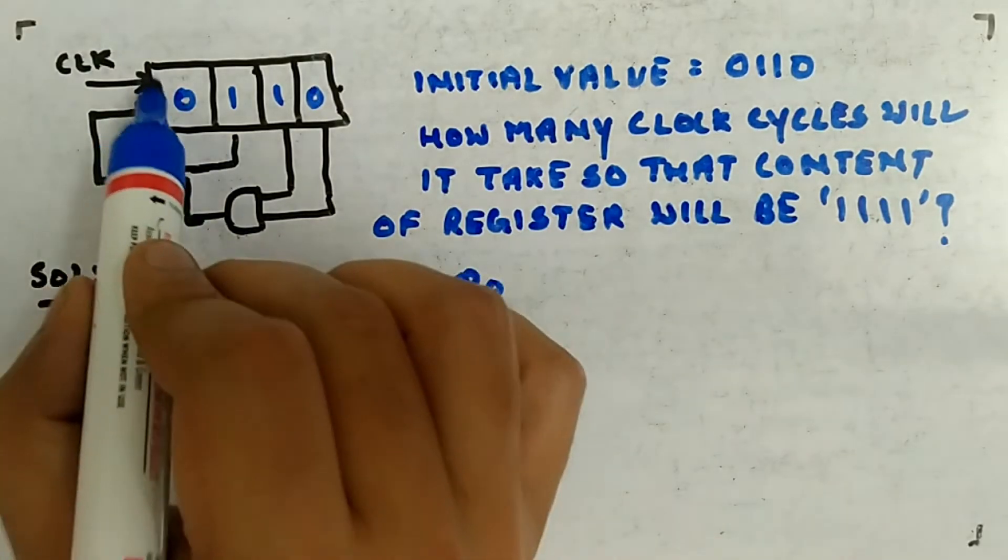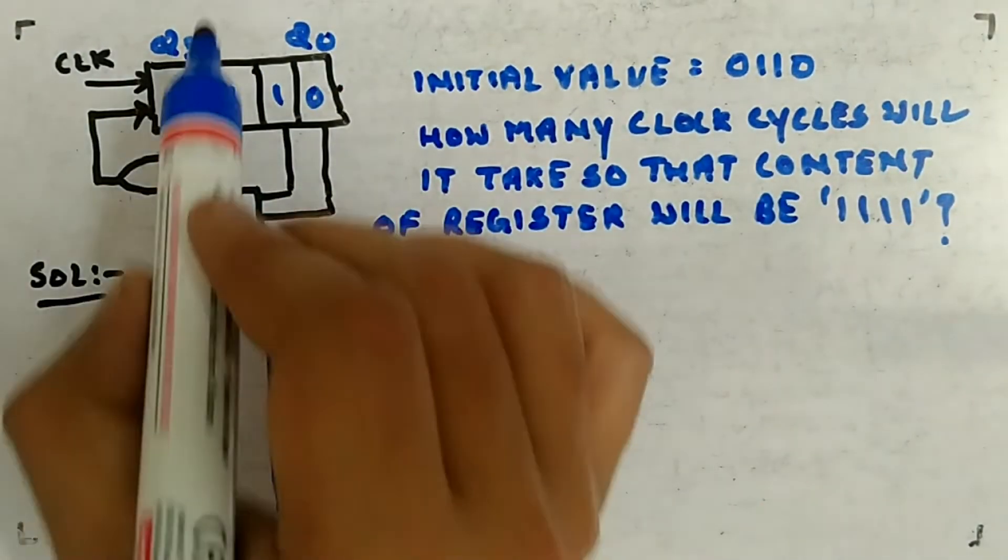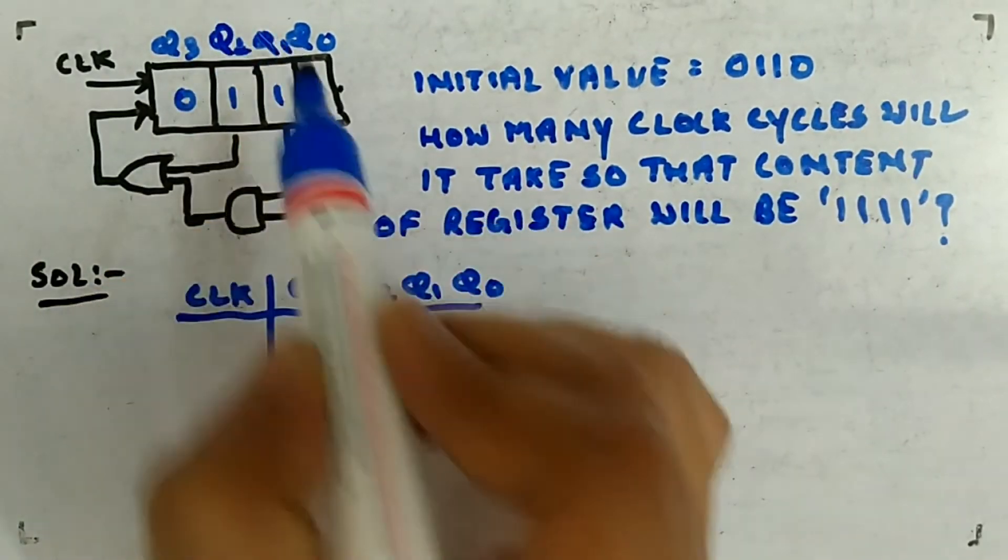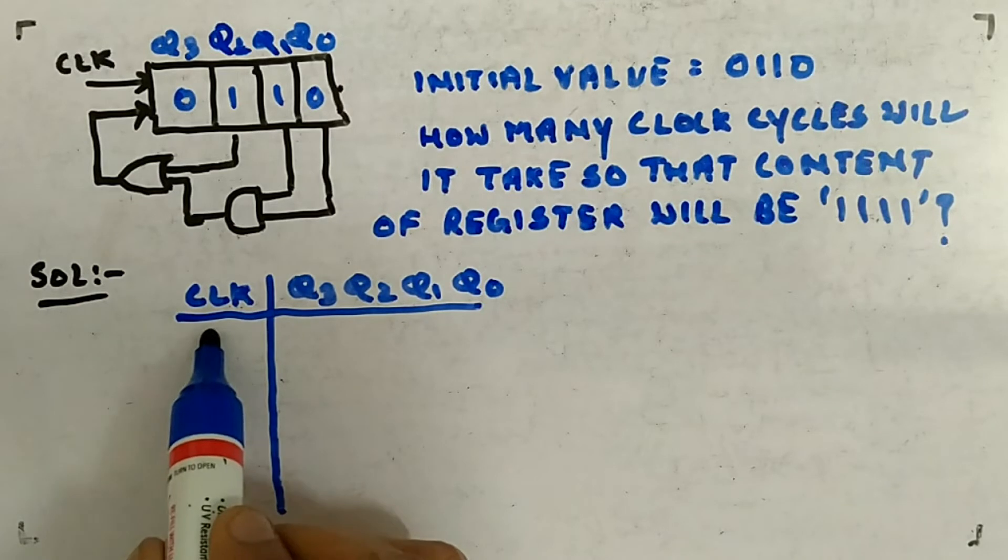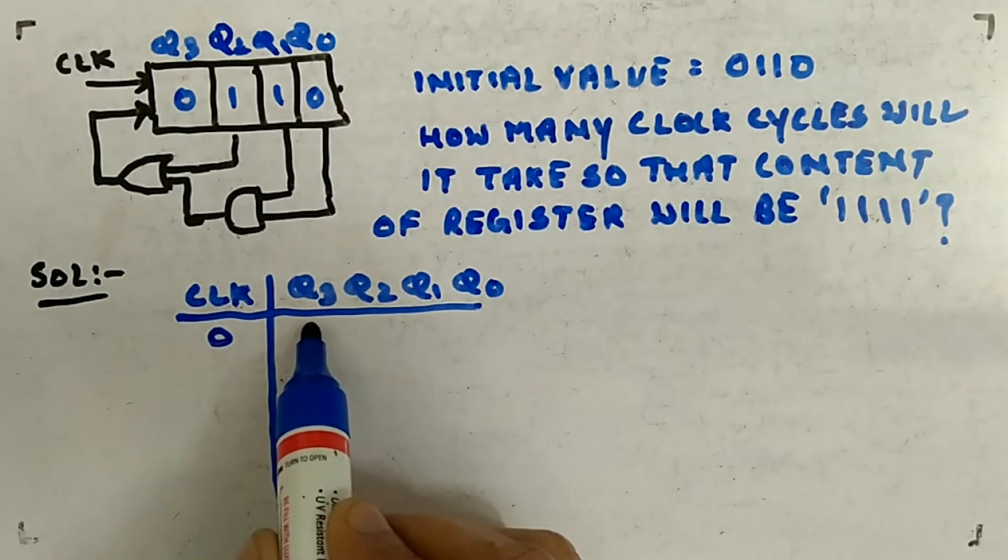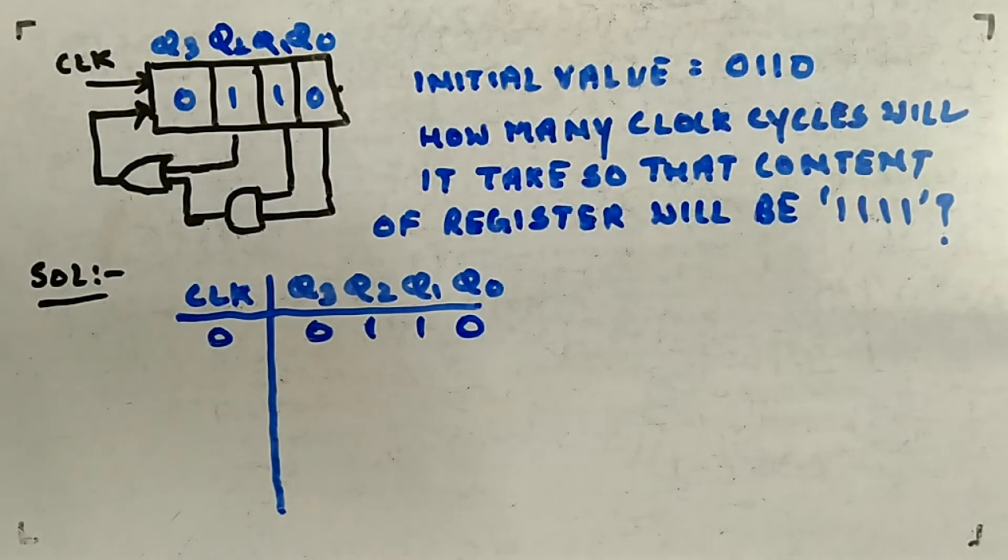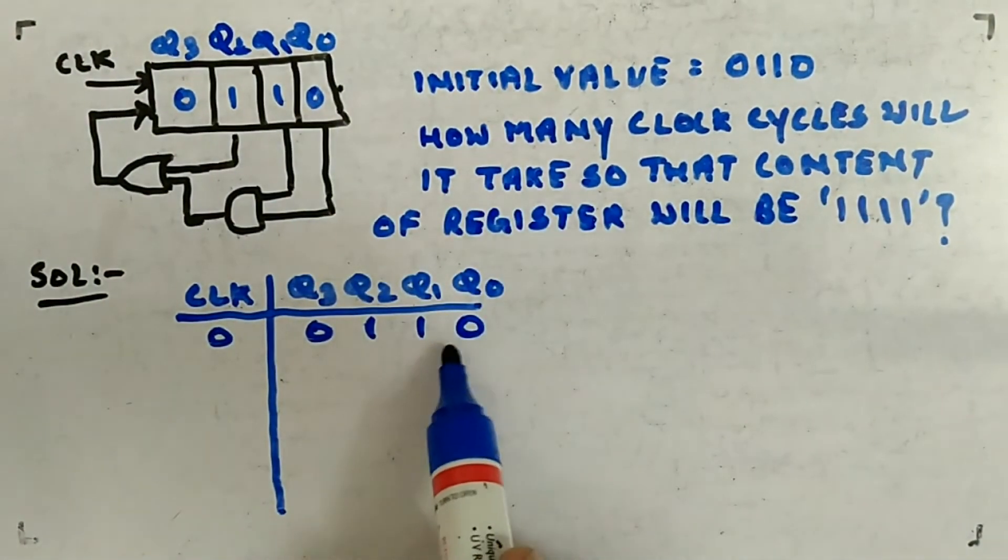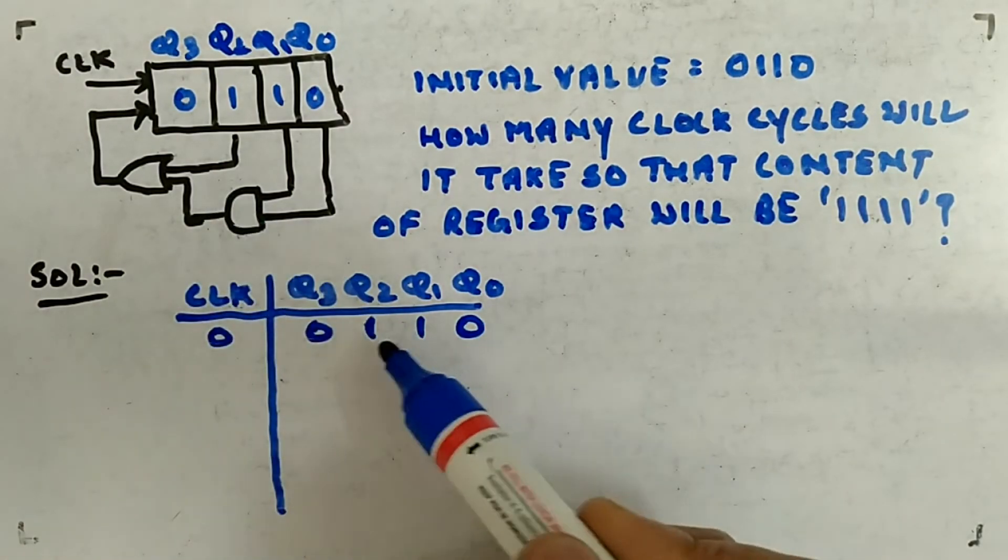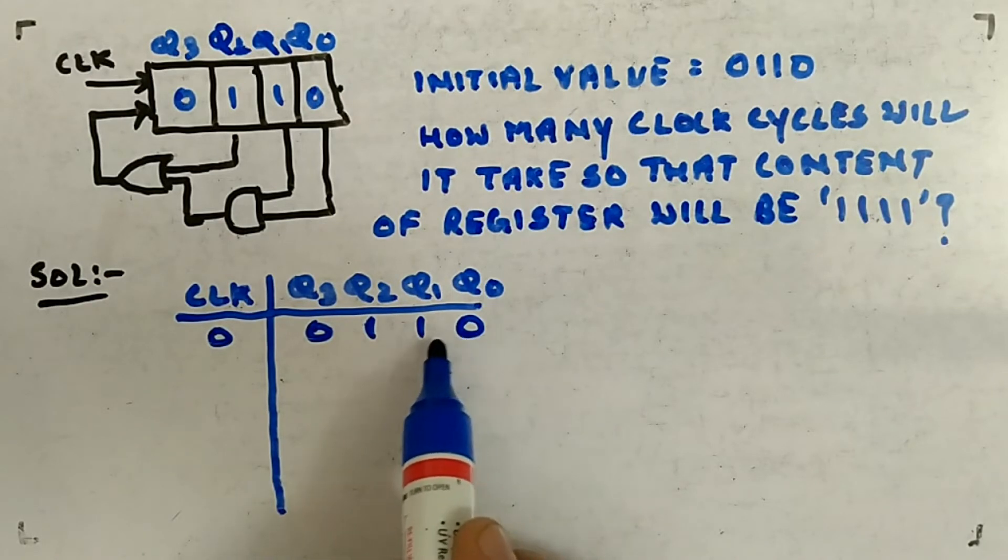This guy is q3, this guy is q0, this guy is q2, q1. So you have to check for each pulse. At 0th clock pulse you have the initial value 0110. Now next clock pulse what will happen? These two guys are ANDed, the last two guys are ANDed, and they are ORed with the second guy.